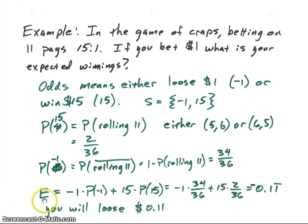Okay, so the expected value of our winnings will be minus 1 times the probability of getting a minus 1, plus 15 times the probability of getting $15. So you just plug in those values, minus 1 times its probability, which is 34/36, and 15 times 2/36.